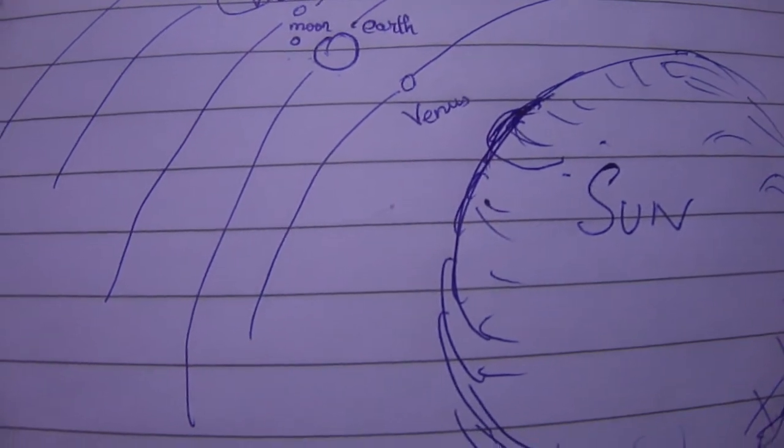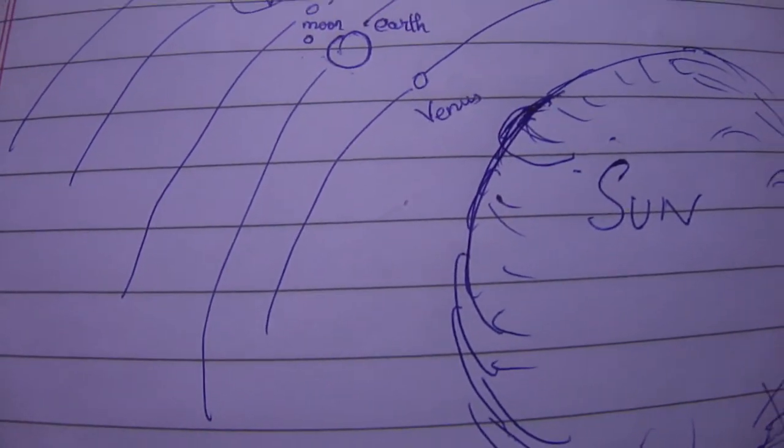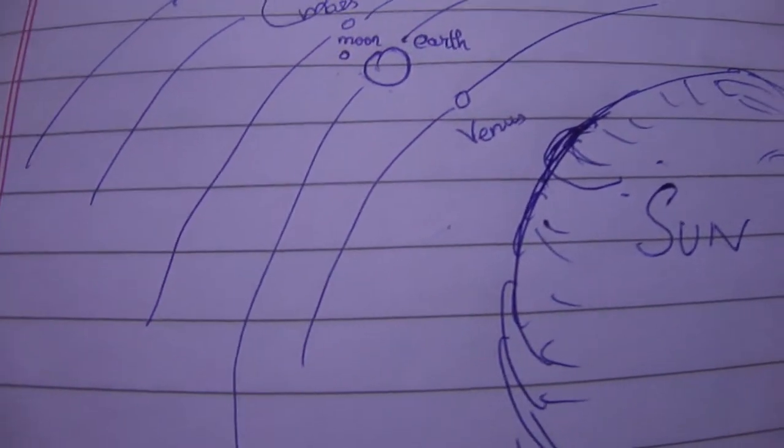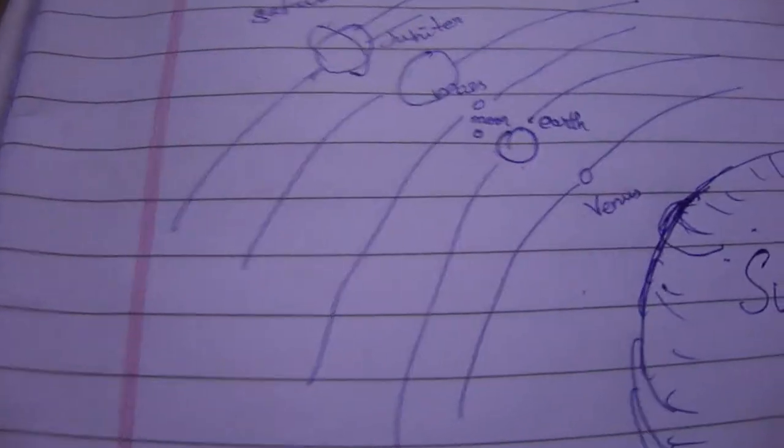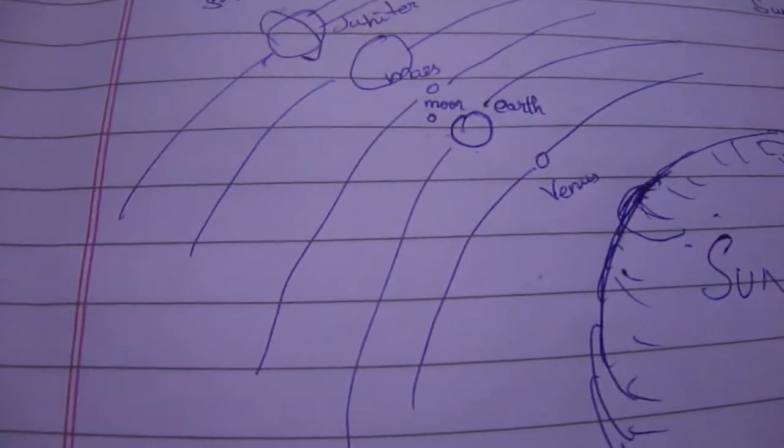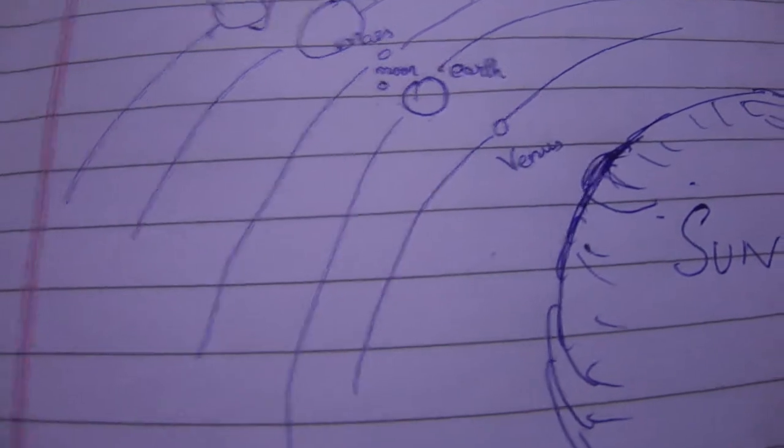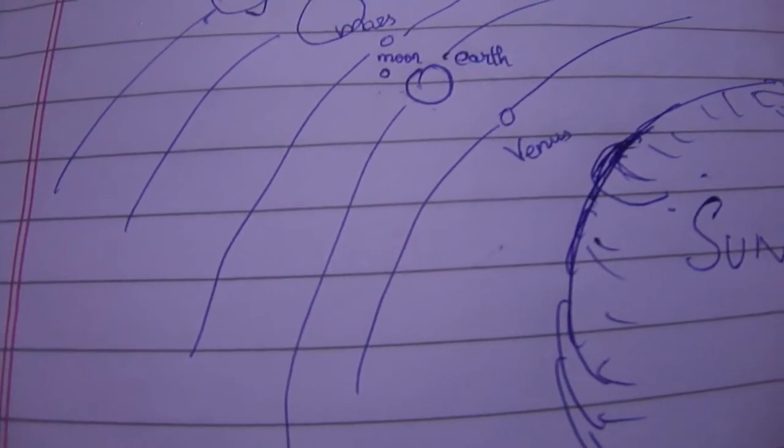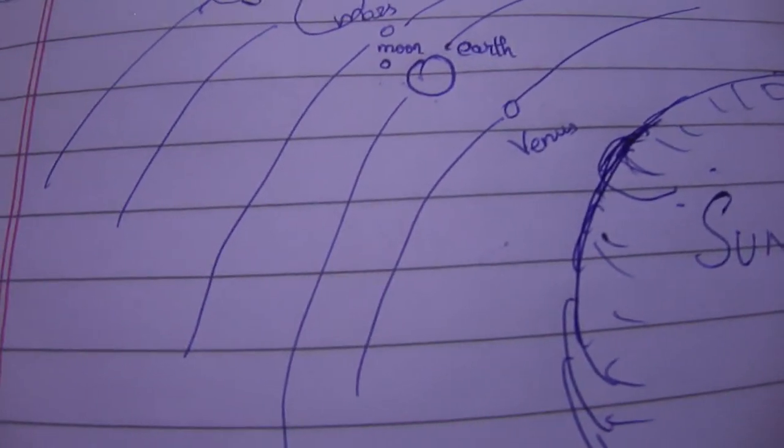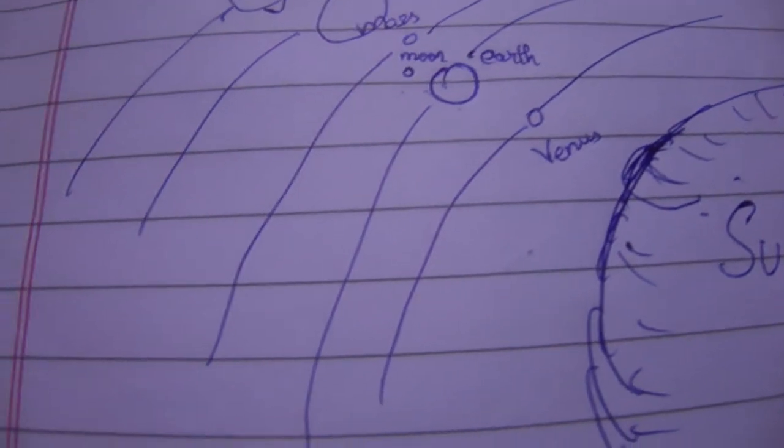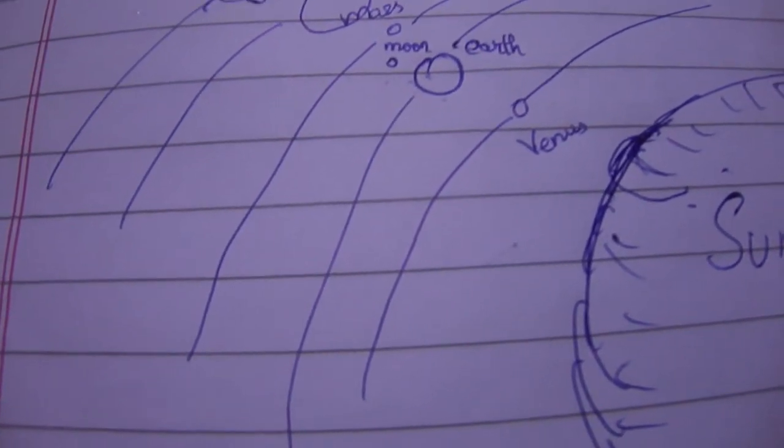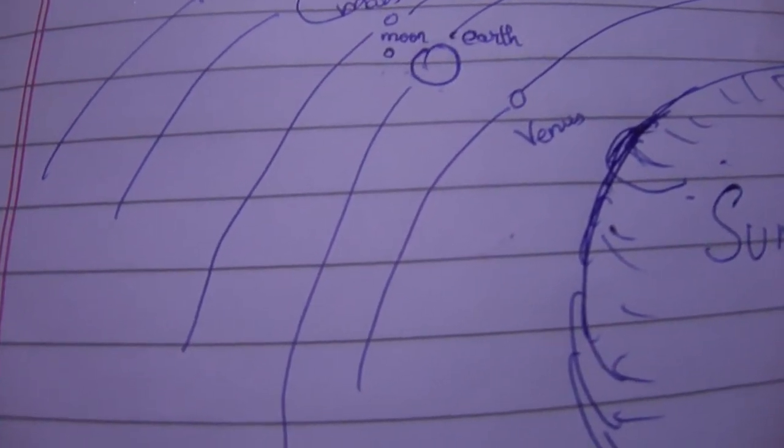Jupiter and Saturn affect most people because they are both very large in size and quite close to Earth comparatively. Hence, most people are influenced by Jupiter and Saturn, whereas the effect of other planets is slightly lesser.